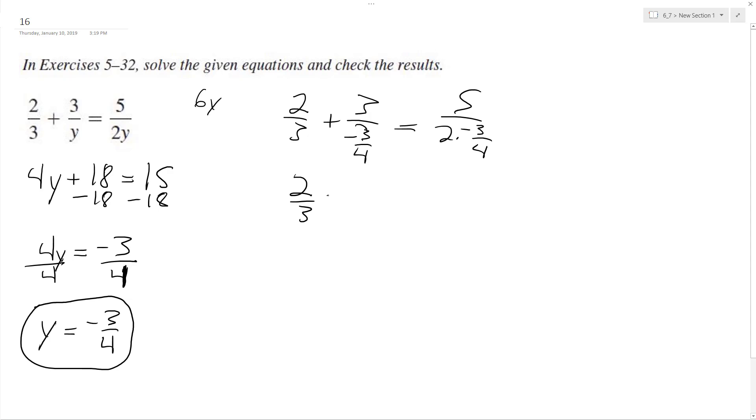This ends up being negative, same thing as 1 over 4, so this ends up being minus 4 equals 5 over 2, so this ends up being 10, negative 10 over 3.